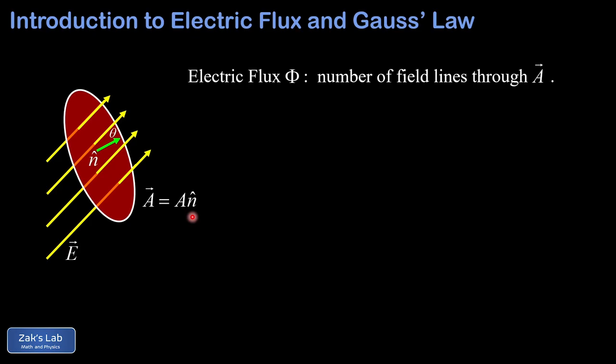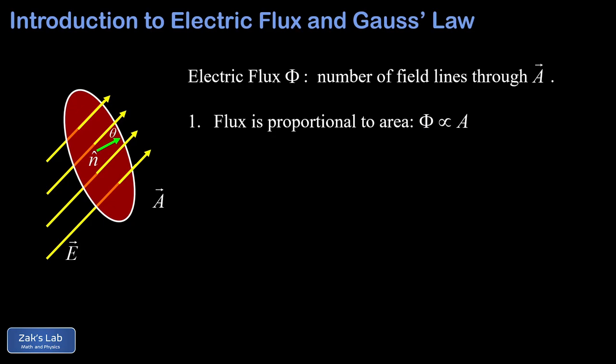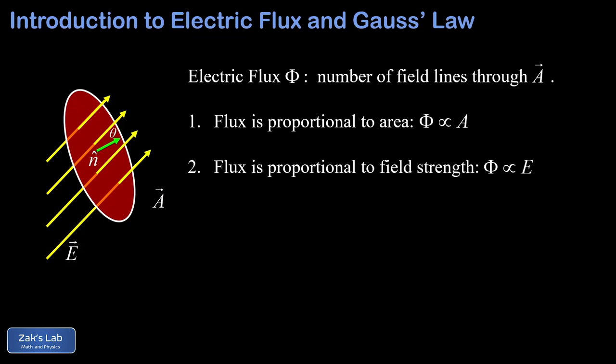The main idea of electric flux is that we want to quantify how much electric field is passing through a given surface — in other words, how many electric field lines are penetrating this surface. We can get a good definition of flux from some basic reasoning about proportionalities. First, the flux should be proportional to the size of the area patch, since doubling the area doubles the number of captured field lines. Second, the flux should also be proportional to the electric field strength — doubling the electric field strength doubles the density of the field lines passing through the area element, so we capture twice as many field lines for the same area A.